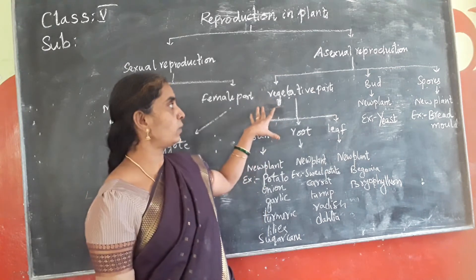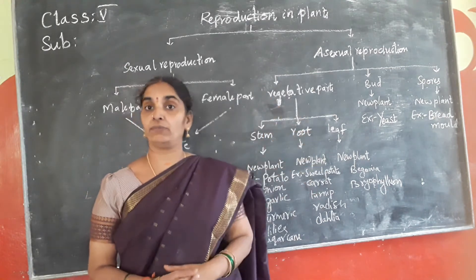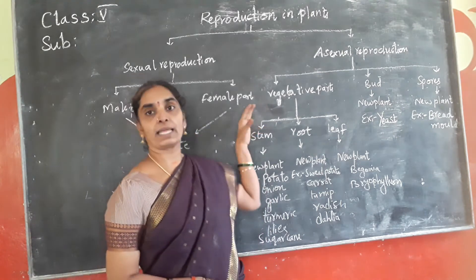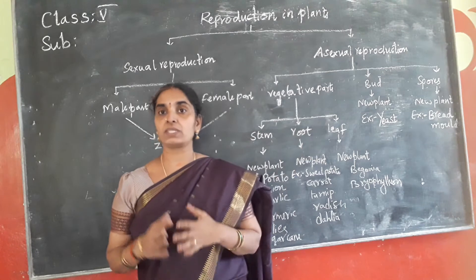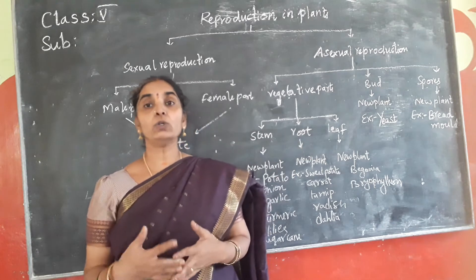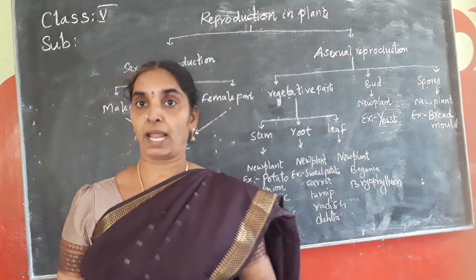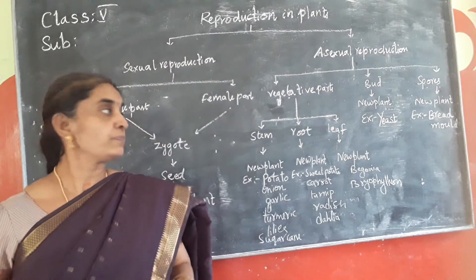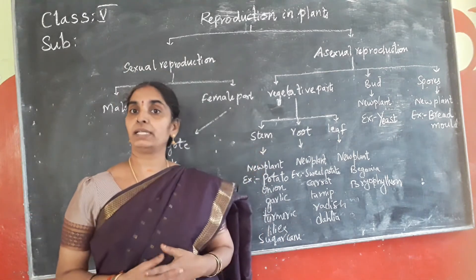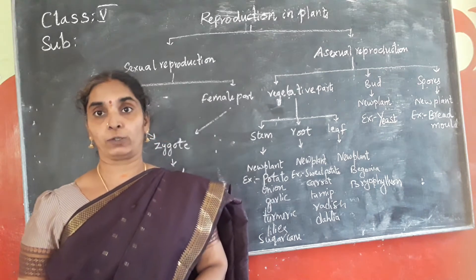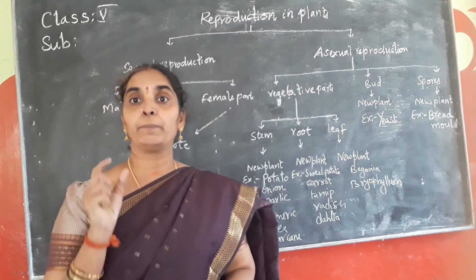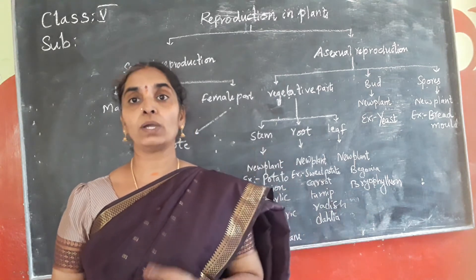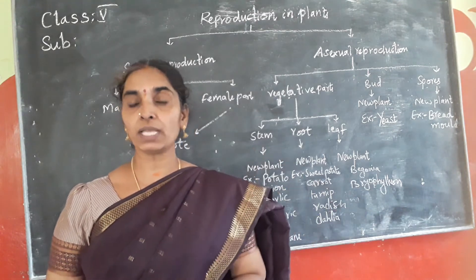You already know about vegetative reproduction — you have learnt this in your classes. The vegetative parts like root, stem, and leaves give rise to new plants. How do plants propagate new plants? Through root, stem, and leaves. If it is the stem, you can take the example of potato. Potato has buds over it, and when you sow it in the soil, it develops into a new plant.